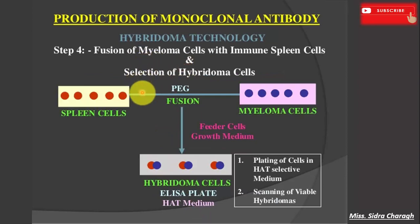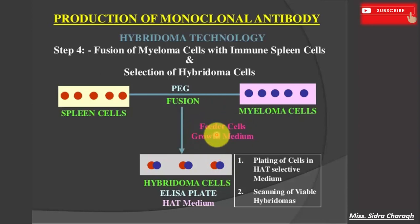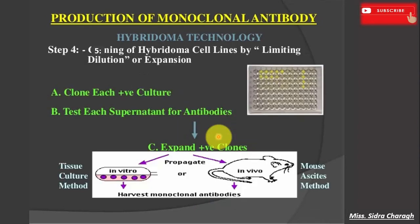The fourth step is fusion of myeloma cells with spleen cells. Single spleen cells from the immunized mice are fused with the previously prepared myeloma cells using polyethylene glycol, a substance that causes cell membranes to fuse. As noted in the previous step, only fused cells will grow in the special HAT medium. The cells are then distributed into 96-well plates containing feeder cells as a growth medium, as feeder cells are believed to supply growth factors that promote hybridoma cell growth.